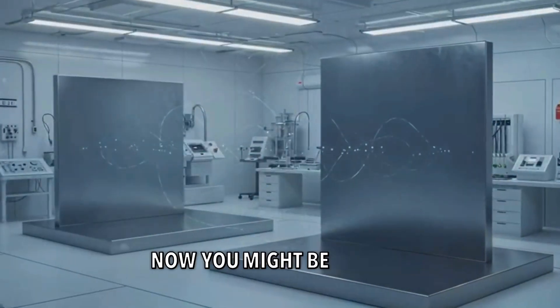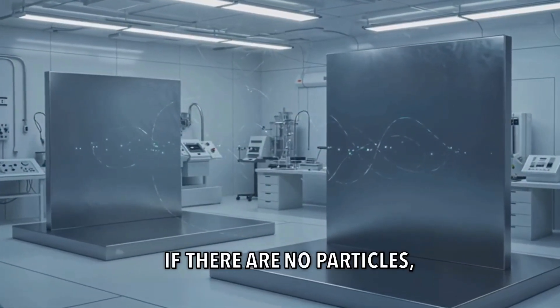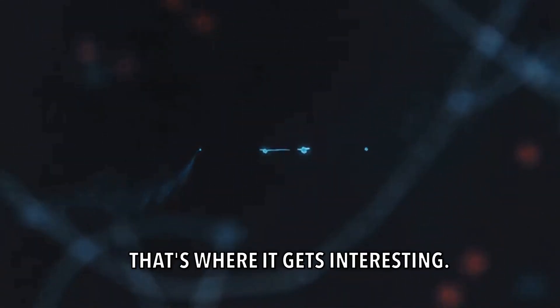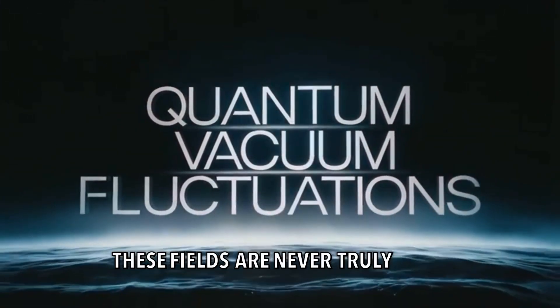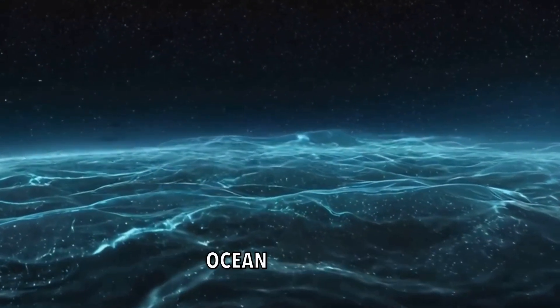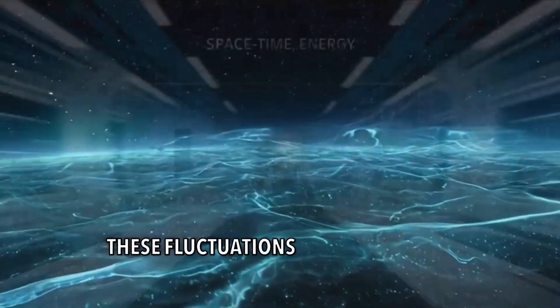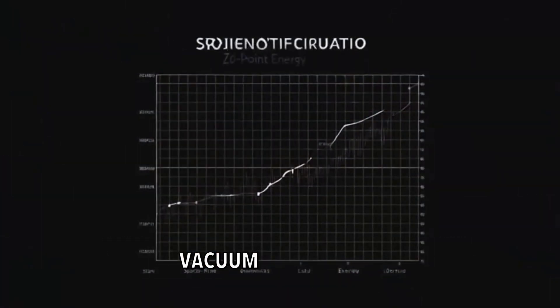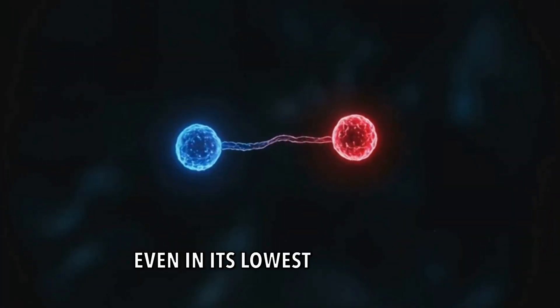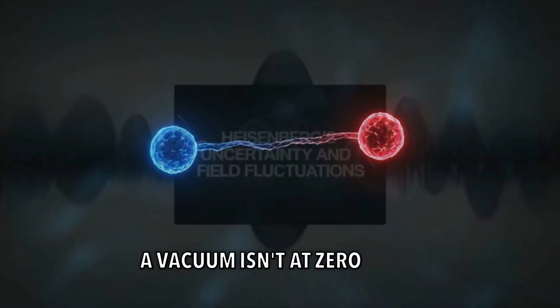Now you might be thinking, if there are no particles, how can these fields do anything? Well, that's where it gets interesting. These fields are never truly at rest. They're constantly fluctuating like a restless ocean of energy. These fluctuations are what we call quantum vacuum fluctuations. And here's the kicker: even in its lowest energy state, a vacuum isn't at zero energy.